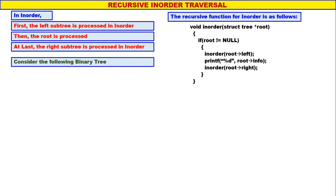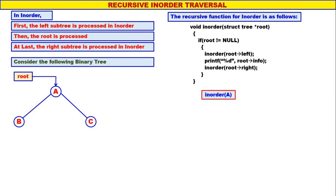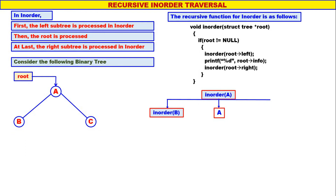Consider the following binary tree. A is the root of the tree, therefore we will call inorder of A. A is not equal to null. Left child of A is B, therefore we will call inorder of B. Then display A. Right child of A is C, therefore inorder of C.